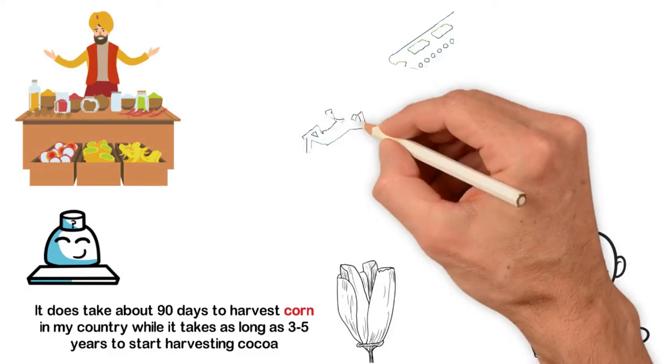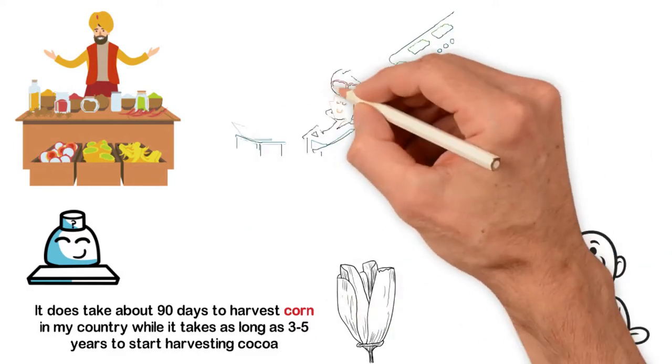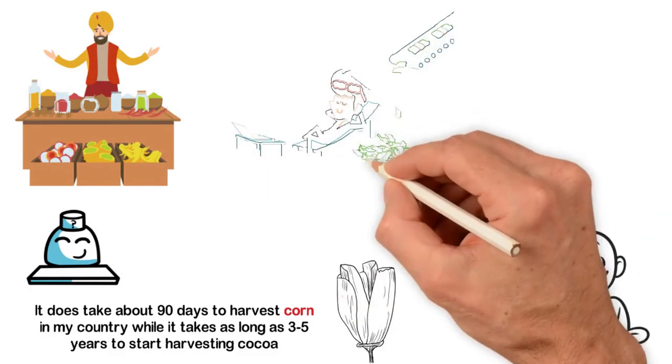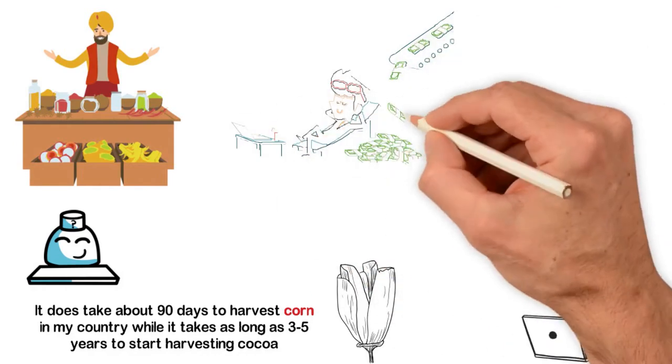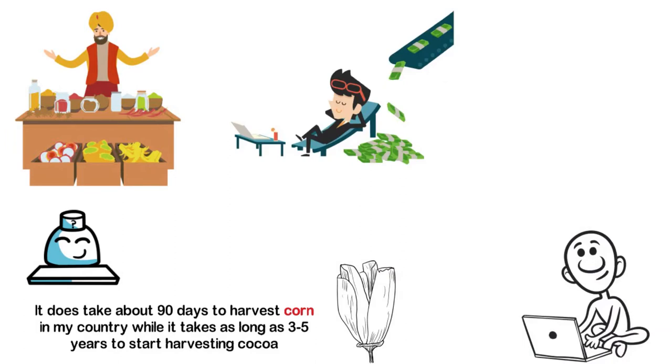However, in the case of cocoa, though it may take you 3-5 years before it starts yielding harvest. When it starts yielding a harvest, cocoa can continue making you money for the next 20 years.